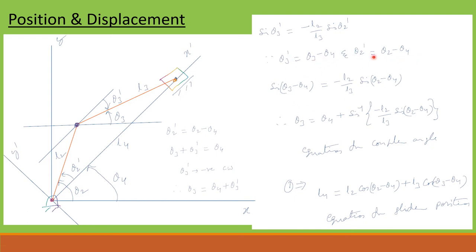From the previous slide, sin theta 3 prime equals minus L2 by L3 sin theta 2 prime. We know that theta 3 prime equals theta 3 minus theta 4 and theta 2 prime equals theta 2 minus theta 4. Substituting these, we get: sin(theta 3 minus theta 4) equal to minus L2 by L3 times sin(theta 2 minus theta 4). Therefore, theta 3 equals theta 4 plus sin inverse of [minus L2 by L3 times sin(theta 2 minus theta 4)]. This is the equation for coupler angle. Similarly from equation 1, L4 equals L2 cos(theta 2 minus theta 4) plus L3 cos(theta 3 minus theta 4), which is the equation for slider position.